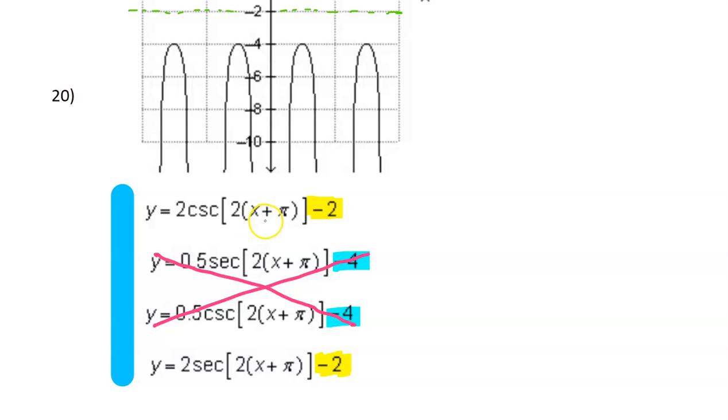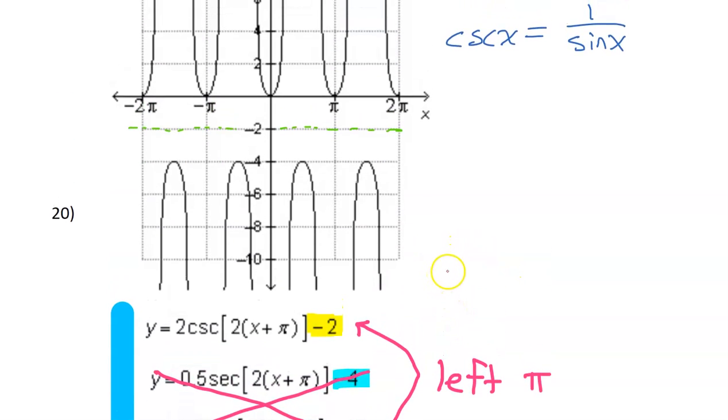Notice that the way a phase shift works is it's the opposite of what it looks like. So if it's plus, it's actually to the left. So both of these two graphs, we can say that they are shifted to the left by pi.